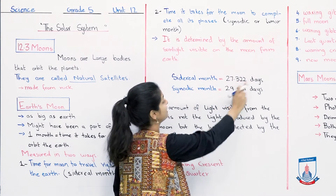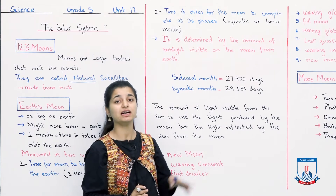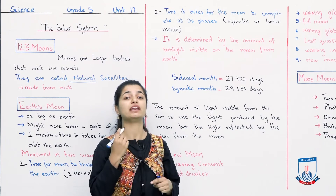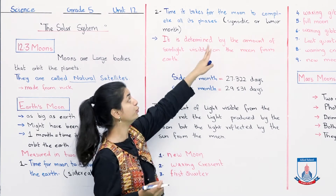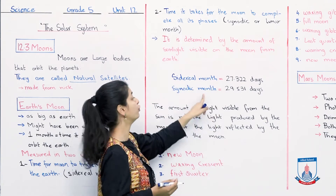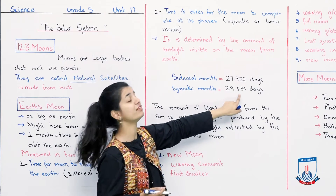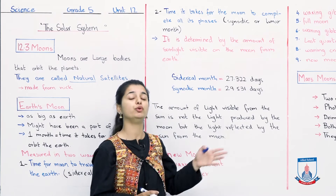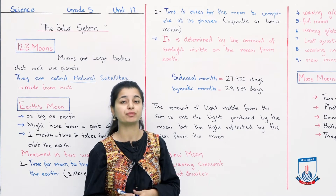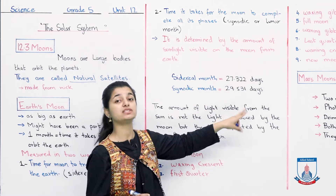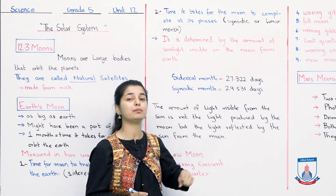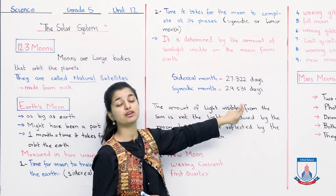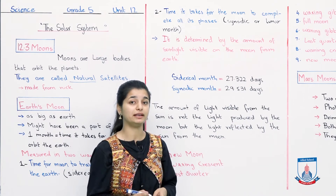Sidereal month is 27.322 days, yani takriban 28 days ka sidereal month hota hai. Aur doosra, jo synodic month ya phir lunar month hai, woh kitna lamba hota hai — 29.531 days, almost 30 days. Jo hum apne months mein usually lete hai woh lunar month ke hisaab se hi calculate hote hai. So sidereal month is about 28 days — ke moon ko kitna time lag raha hai earth ke ird-gird jaane mein. Aur lunar month is about 30 days — ke moon apne sare phases kitni dher mein complete kerta hai.